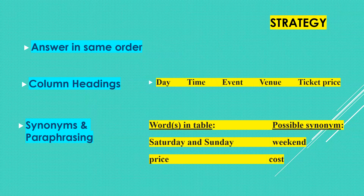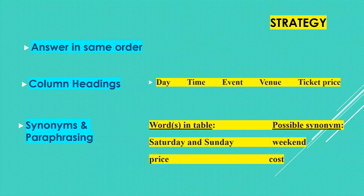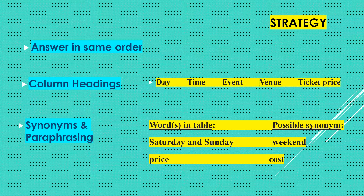The columns in the table will have headings that tell you what type of information each column contains. It is essential to read these during your preparation time as they will help you to understand the table and give you a big clue as to what sort of information will be contained in the recording. For example, the table here shows column headings: date, time, event, venue, and ticket price.